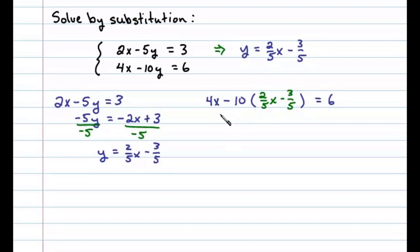That leaves us with an equation with one variable we can solve for x. Let's begin by distributing this negative 10. So we have 4x minus 10 times two-fifths is 4, so 4x minus 4x. Negative 10 times negative three-fifths will leave us with a plus 6.